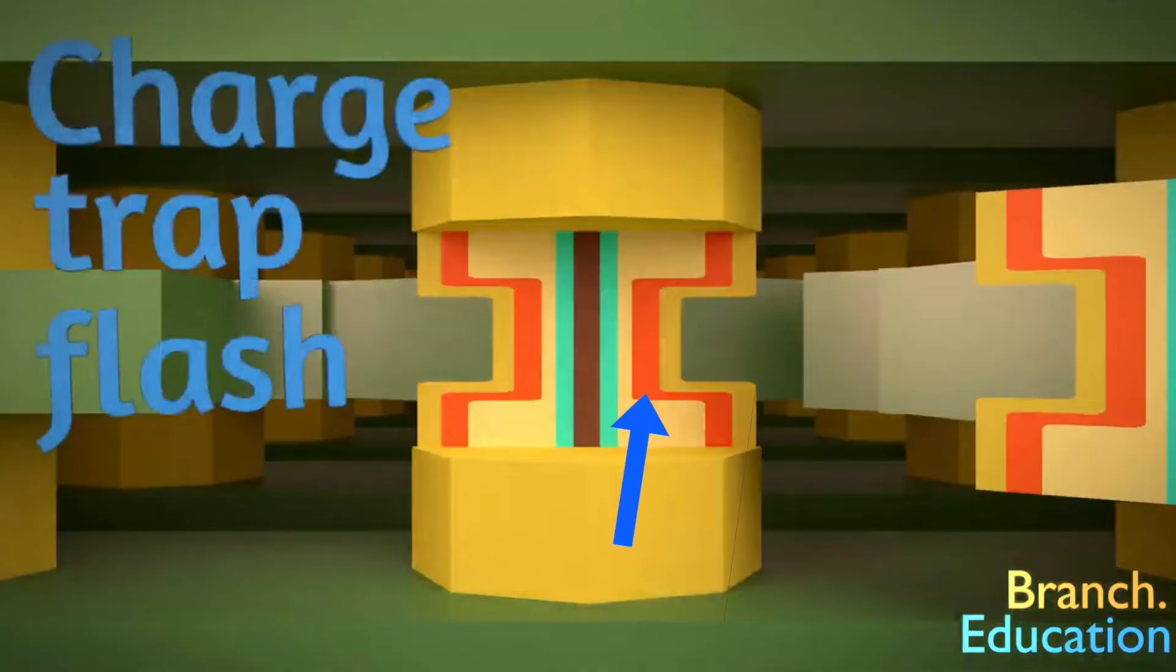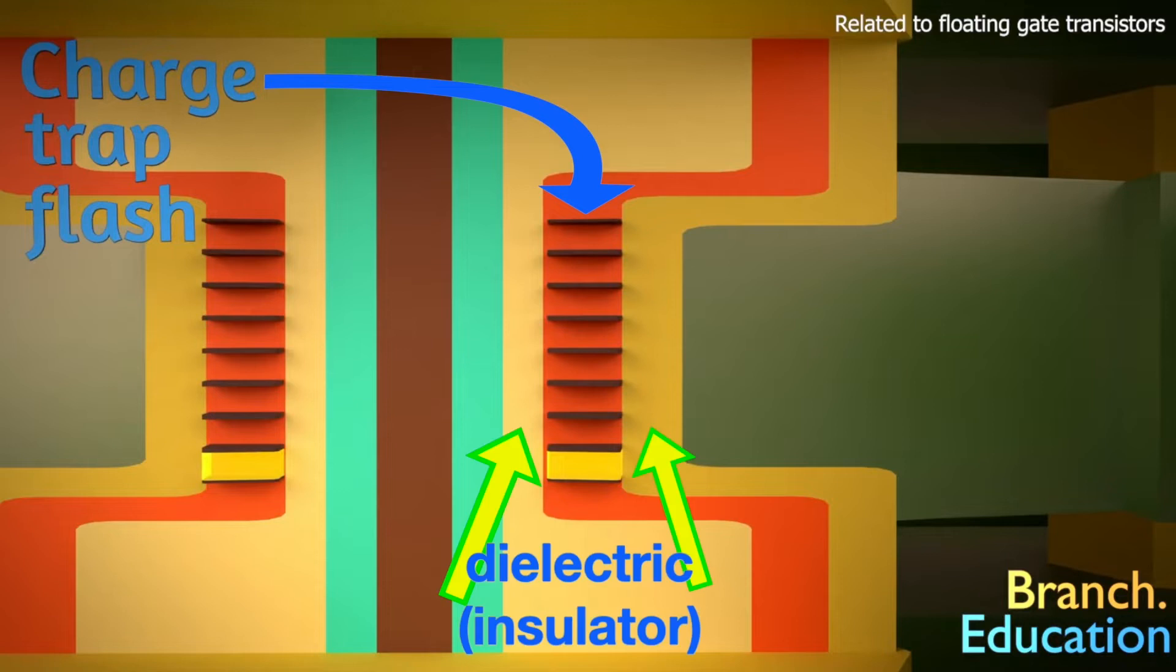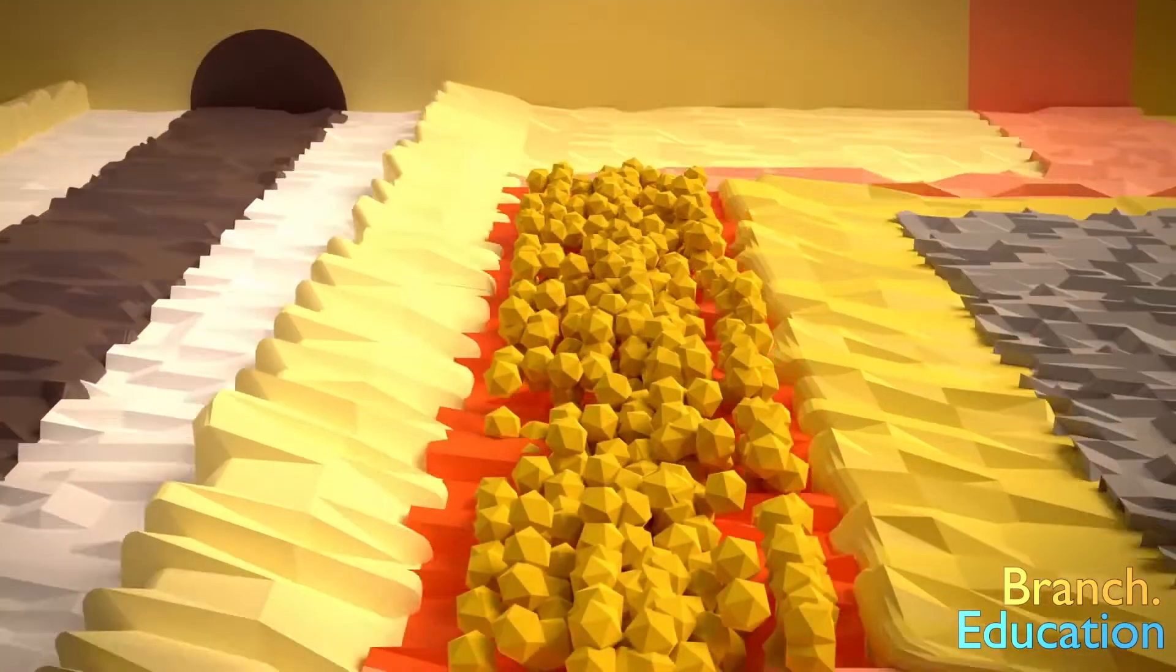The charge trap is shown here as an orange bar, which is like a valley within which electrons get trapped. The charge trap is surrounded by dielectric material, where the yellow arrows are. That is an insulator that keeps electrons from passing through. You can think of the charge trap as being a valley, and the dielectric material as being the walls of the valley.